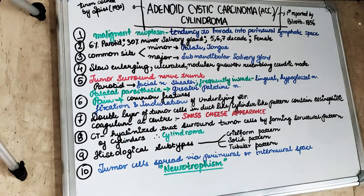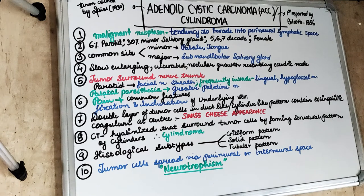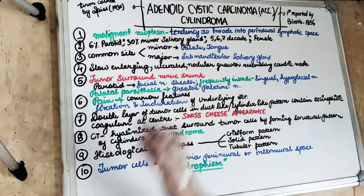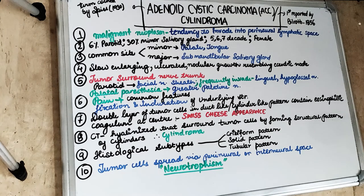The specific feature of this tumor is that it has a tendency to invade into the perineural lymphatic space — it has a neural connection. The tumor surrounds the nerve trunk and spreads along with the nerve. This is the reason that Adenoid Cystic Carcinoma is painful, while the other tumors we have studied are painless. It is also known as Cylindroma because the connective tissue is hyalinized and surrounds the tumor cells by forming a structural pattern of cylinders.